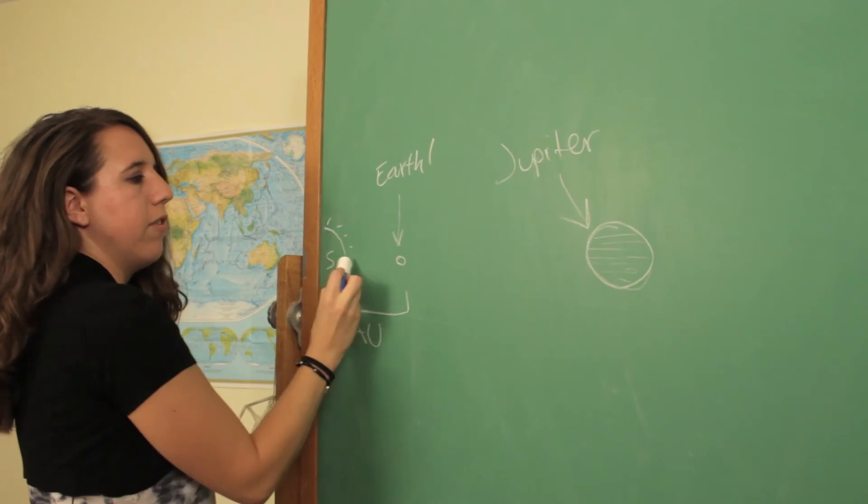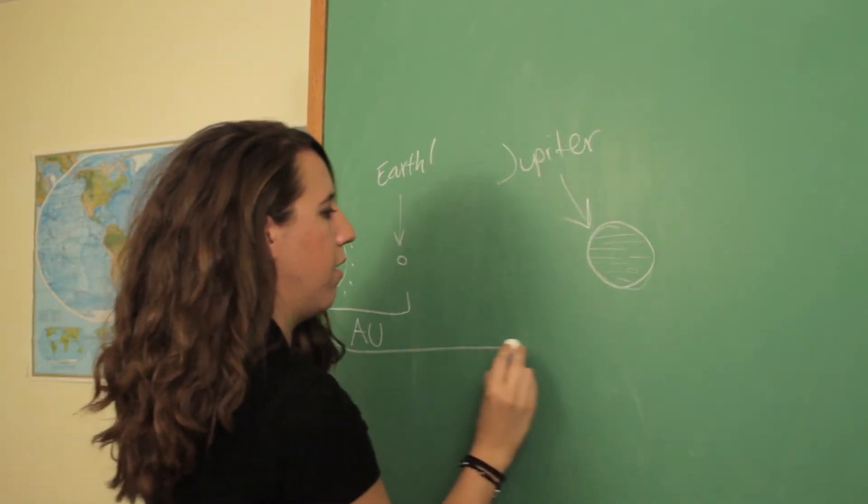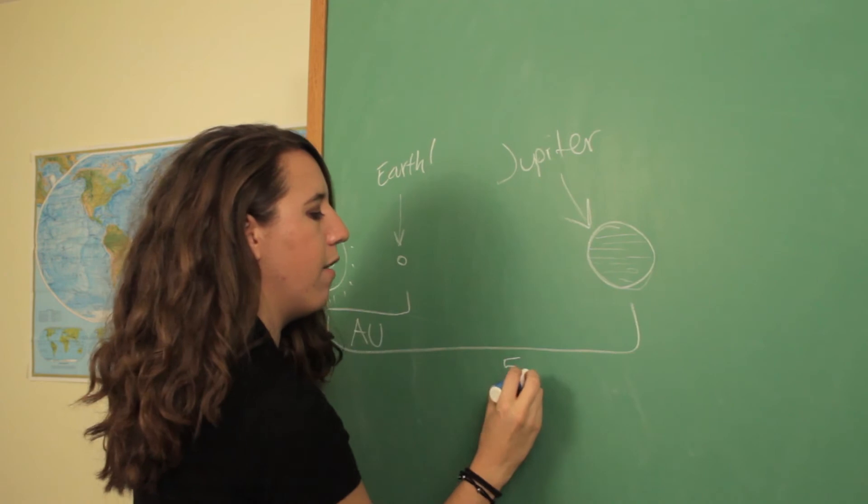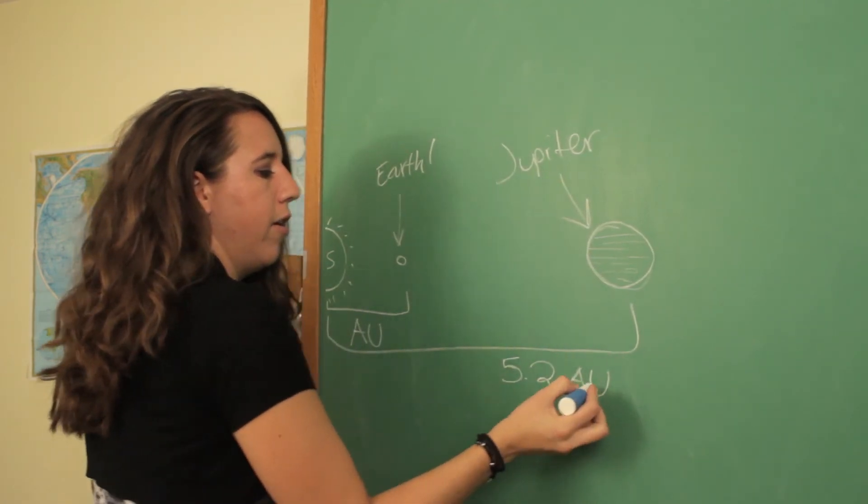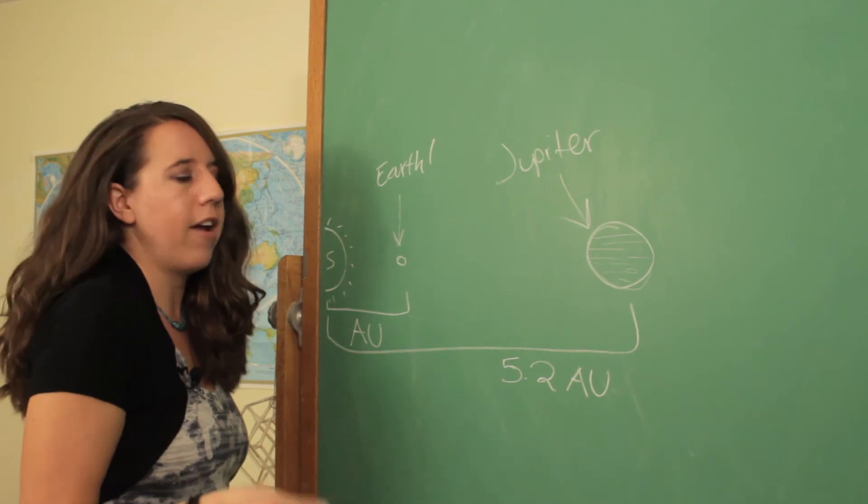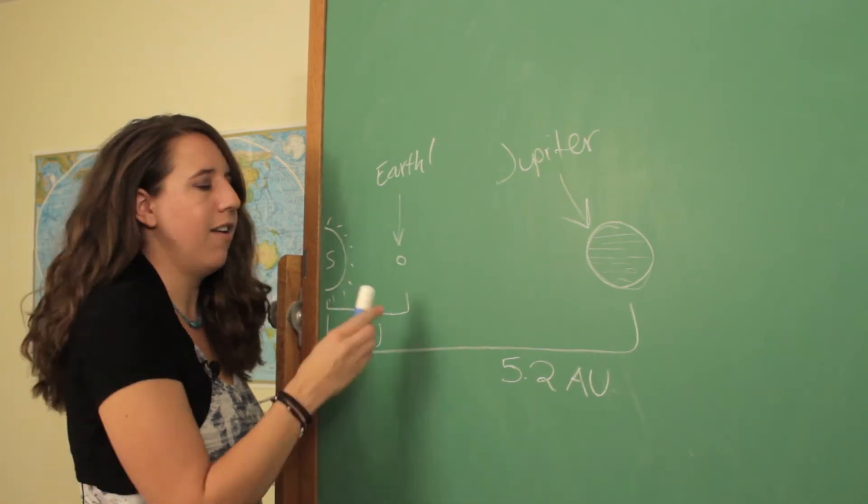So Jupiter's distance is going to be about 5.2 astronomical units. So it's a little over five times the distance away from the sun that the Earth is.